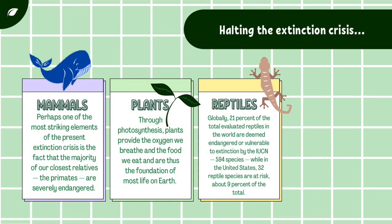Mammals: about 90% of primates — the group that contains monkeys, lemurs, lorises, galagos, tarsiers, and apes as well as humans — live in tropical forests, which are fast disappearing. In addition to primates, marine mammals, including several species of whales and dolphins, are among those mammals moving most quickly towards extinction.